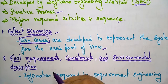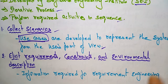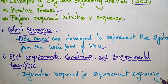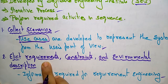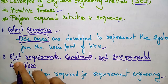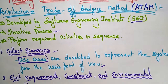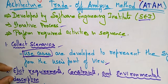Next, elicit requirements, constraints, and environment description — the information required for requirement engineering. Whatever requirements are present, that information has to be acquired by the developers. Eliciting requirements, constraints, and environmental description is essentially requirement engineering.